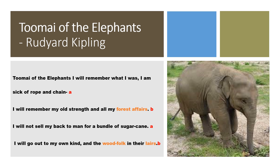'I will go out to my own kind and the wood folk in their lair.' He wants to go back to his own kind — his wood folk, his friends in the forest. 'Lair' means where the animals live, the homes of the animals. The next stanza speaks again of his wishes and aspirations.